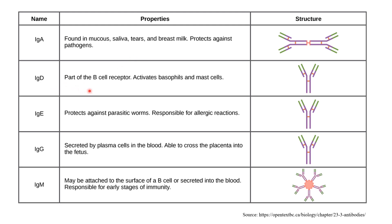IgD is part of B cells. It activates basophils and mast cells. IgD is involved in immunity activation.